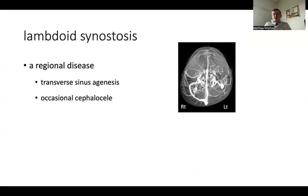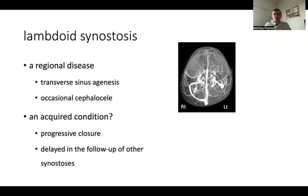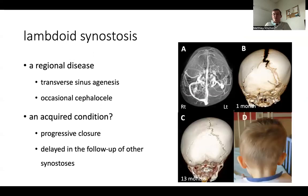The lambdoid suture should be seen in many cases as a regional disease. When it is unilateral, you very often have agenesis or hypogenesis of the transverse sinus, and you can occasionally have an occipital cephalocele. In the same patient, you can see that this child had initial stiffening of the lambdoid suture which disappeared progressively. When you have a unilateral closure of the lambdoid suture, you have to expect that in the following years it may complete contralaterally or by affecting other sutures.